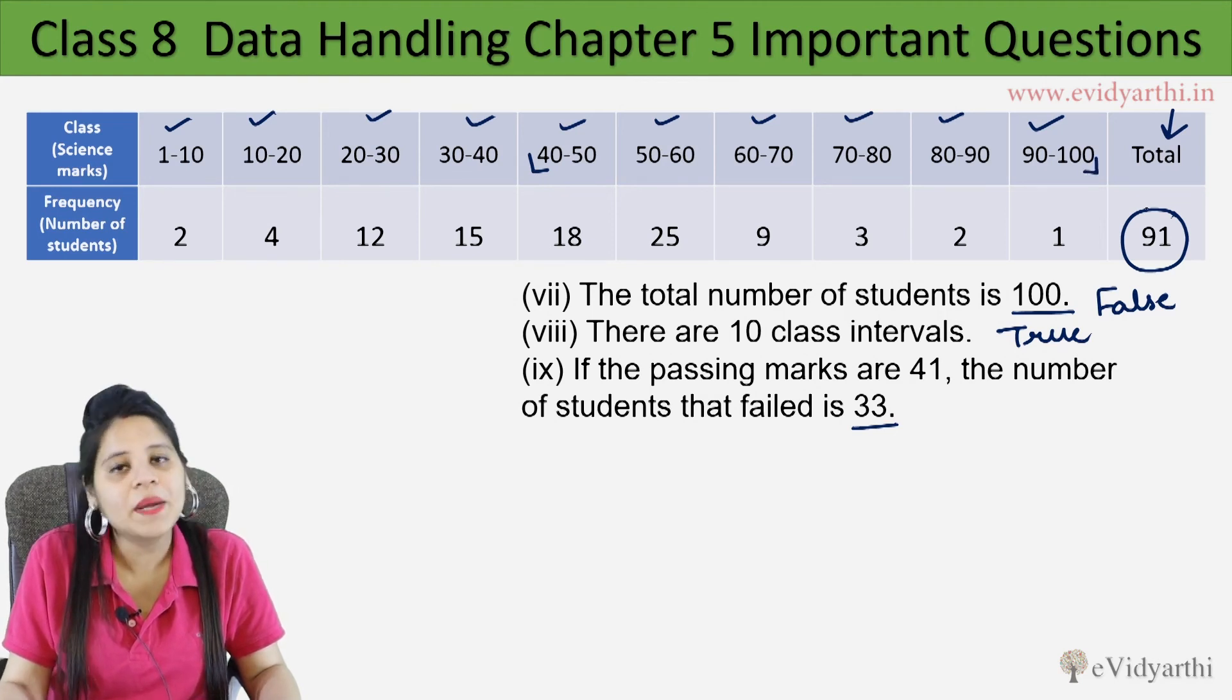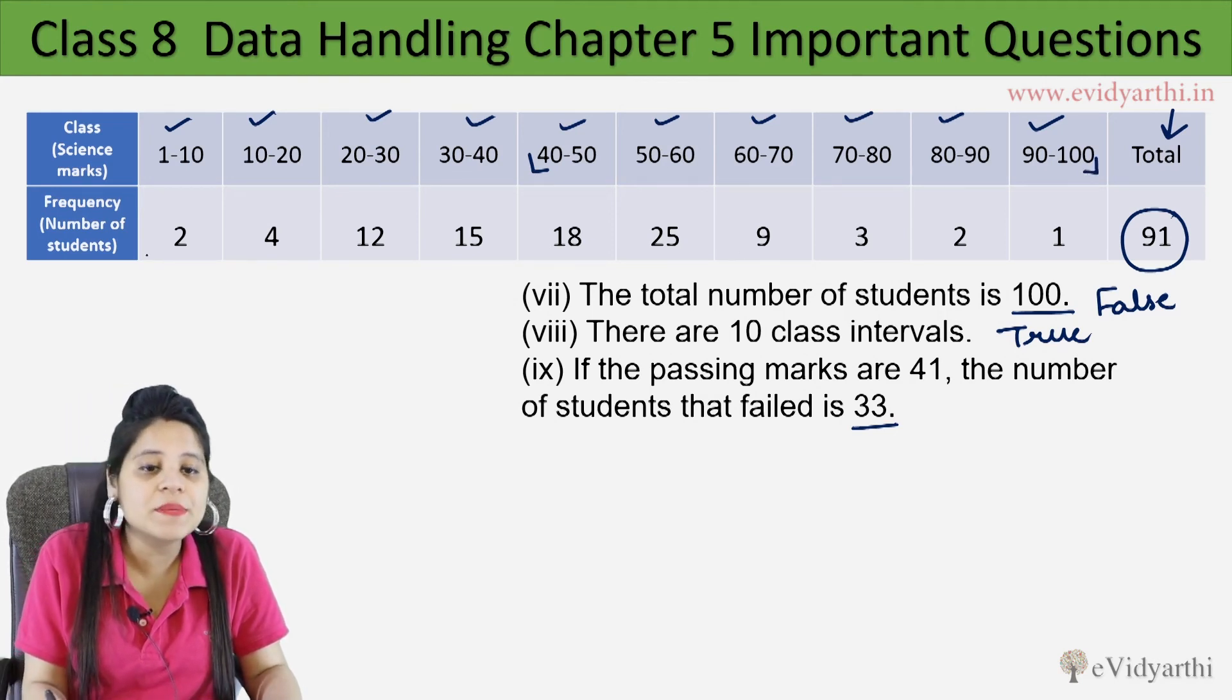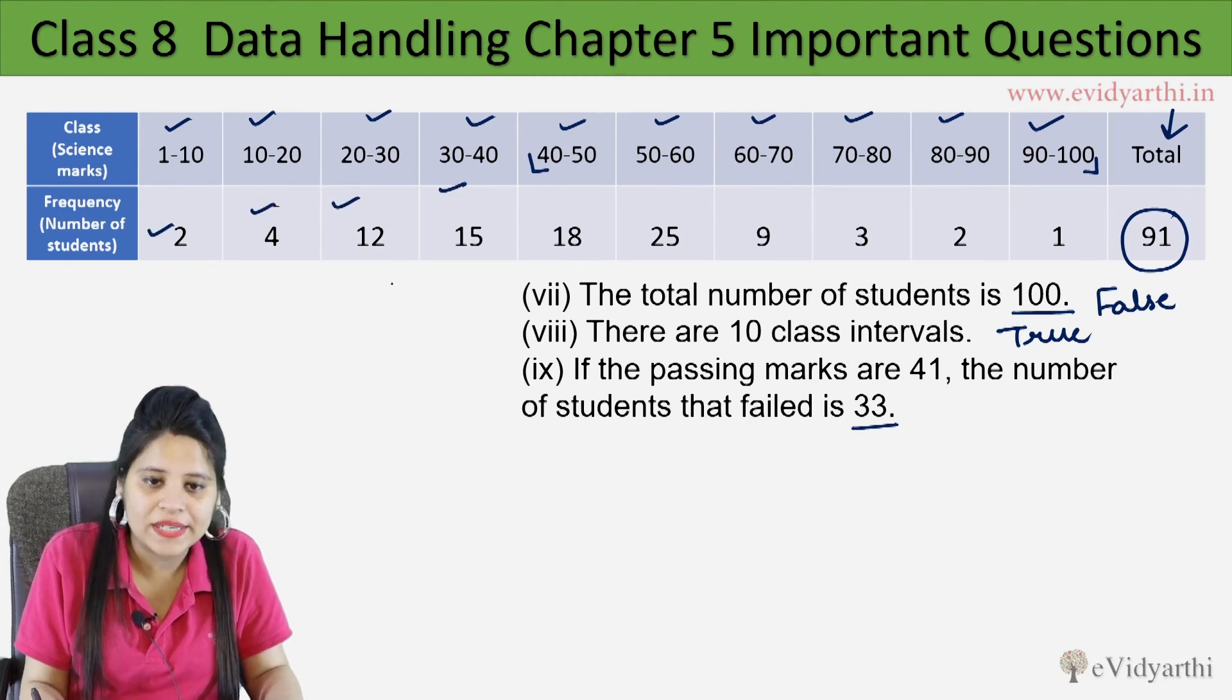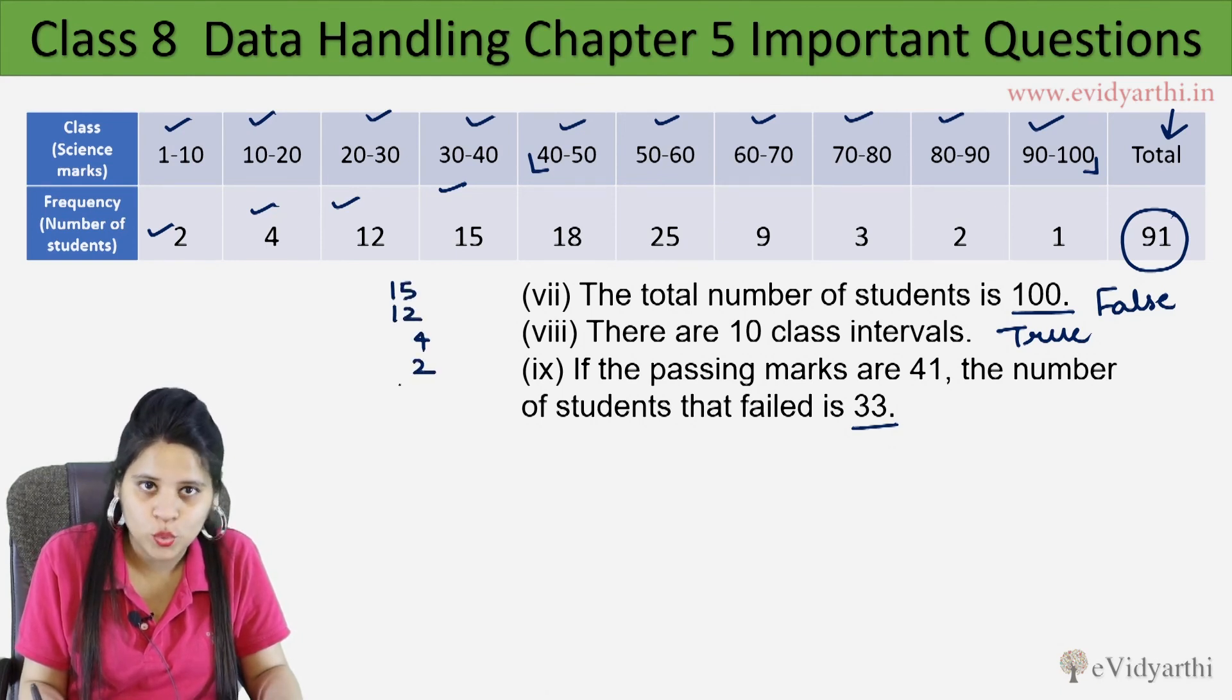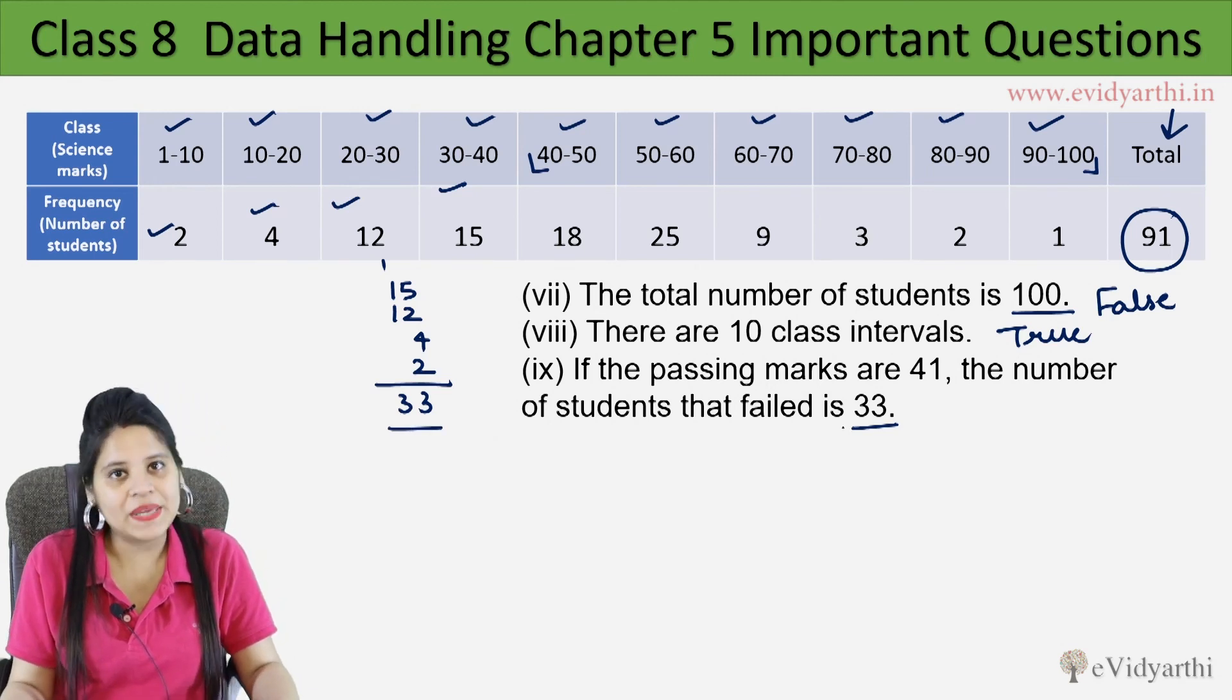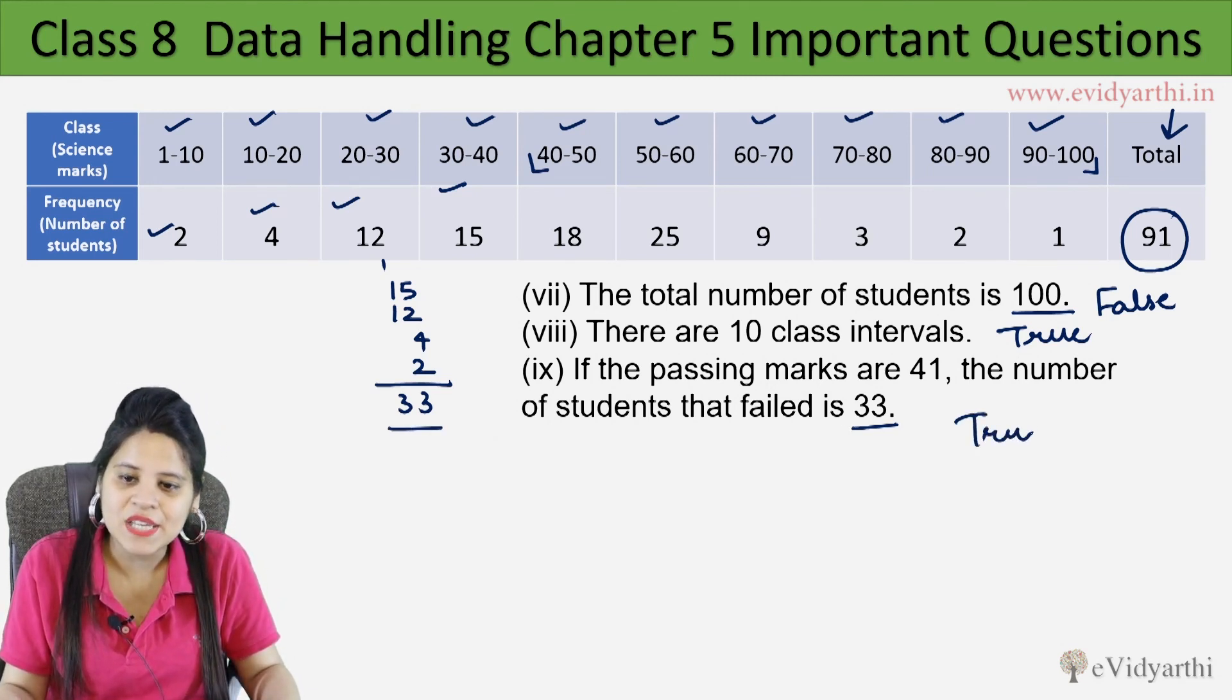If passing marks is 41, so here is 41 passing marks. We add up the frequencies: 2, 4, 12, 15. How many students failed are? 33. Here is this given here. So this means this is true.